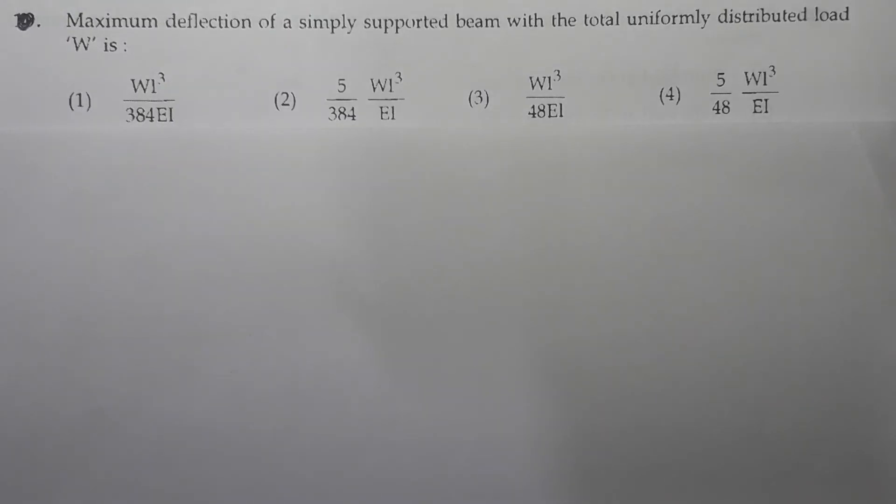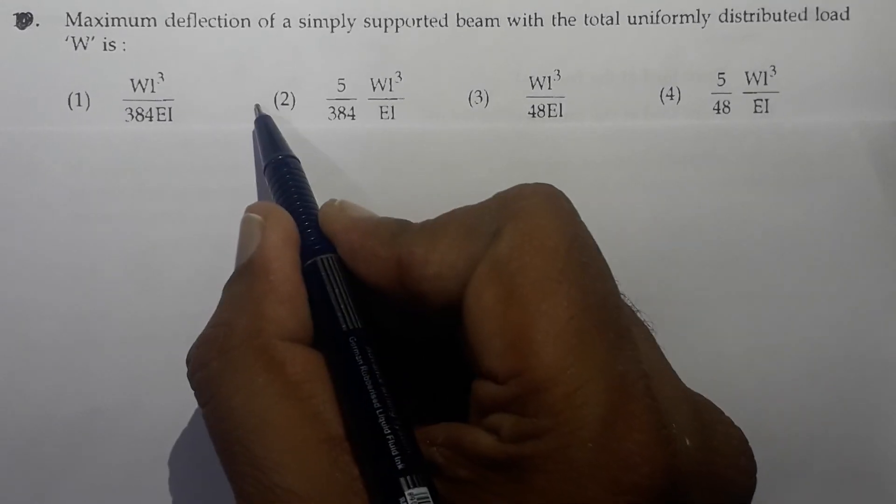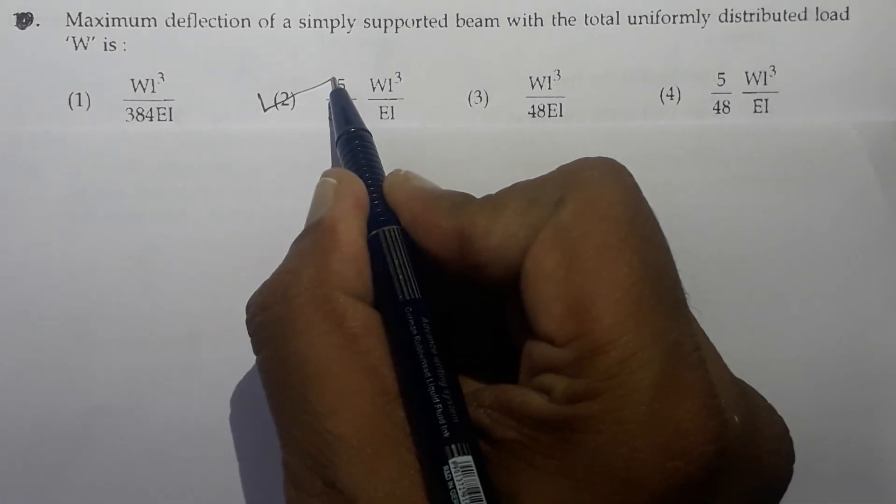Next question: Maximum deflection of a simply supported beam with the total uniformly distributed load W is. Now it is a standard formula which is well known to us. The maximum deflection in case of a simply supported beam carrying a UDL over its entire span is given by 5 by 384 WL cube upon EI.